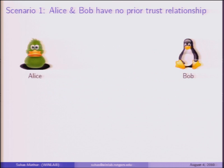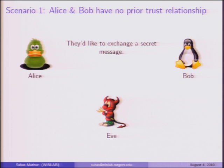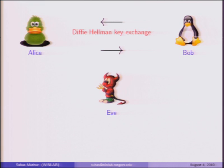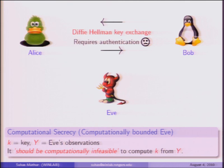In this first example, Alice and Bob are two wireless users who have never met each other. They share no prior trust relationship and wish to exchange a secret message. Unfortunately, there is also a malicious adversary in the same vicinity—a wireless user we call Eve. One thing Alice and Bob can do is a Diffie-Hellman key exchange, where they exchange primitives over the air to form a shared key. However, Diffie-Hellman requires authentication to be secure, which they lack. A further caveat is that Diffie-Hellman provides secrecy by a computational notion of secrecy—it is computationally infeasible for Eve to derive the same key K using her observations Y.